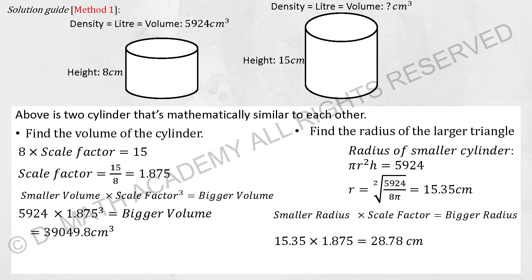The scale factor must be raised to the power of 3, or cubed. So 5,924 multiplied by 1.875 to the power of 3 gives the bigger volume, which is 39,049.8 cm³. To find the radius of the larger cylinder, first find the smaller cylinder's radius using the formula — getting 15.35 — then multiply by 1.875 to get 28.78. Remember: for area, square the scale factor; for volume, cube it; for length or weight, use it as is.